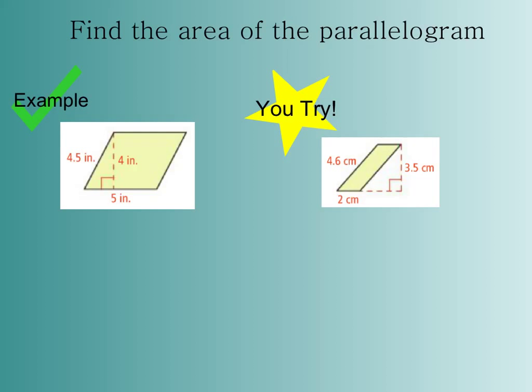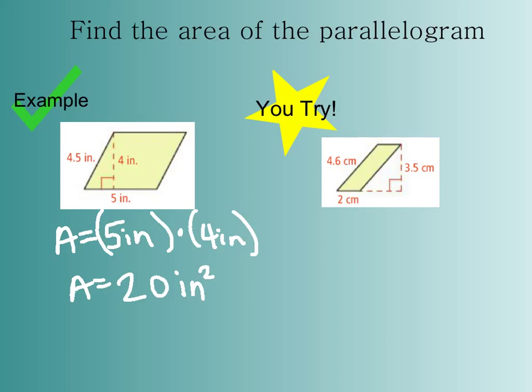So when I plug these things into my formula, I have area equals, the base that I have to use is 5 inches, because that is the base that is involved with my 4-inch height. So I have area equals 5 times 4 is 20, and inches times inches becomes inches squared. So whenever we have an area, we will always have squared units. In this case, my answer is area equals 20 inches squared. Then I also have a U-try there for you to do, so please bring that with you to class.